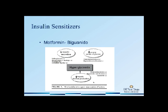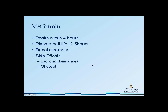Moving on to other oral hypoglycemics, the second one that we use in pregnancy is metformin, which is a biguanide. Its mechanism to target hyperglycemia is to increase muscle uptake of glucose. Metformin peaks within four hours of ingestion, the plasma half-life is about two to five hours, and it is primarily cleared by the kidney.